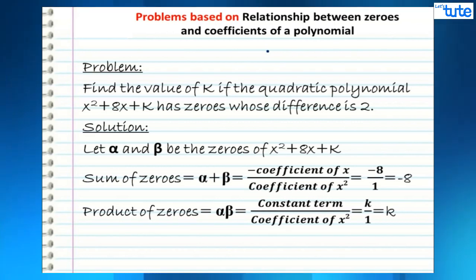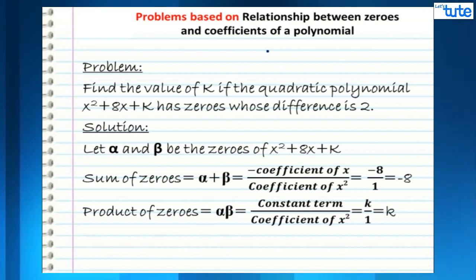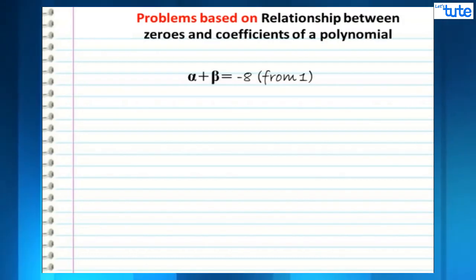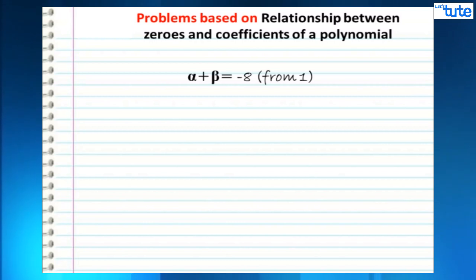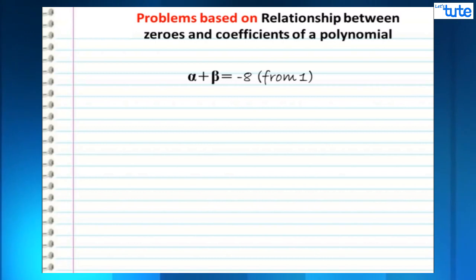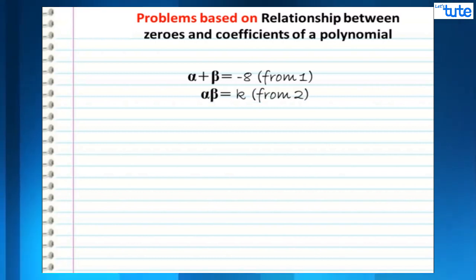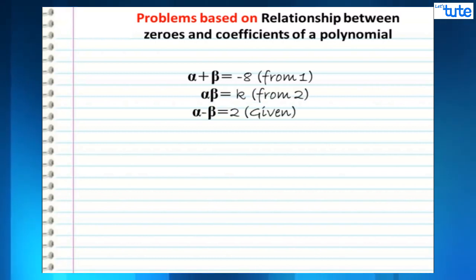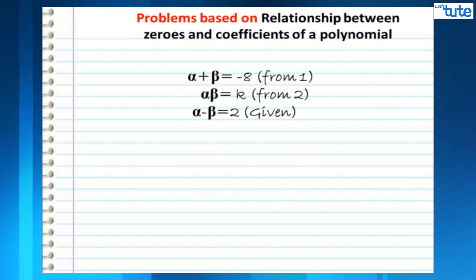Now we have: alpha plus beta equals minus 8 from equation 1, alpha times beta equals k from equation 2, and we have been given that alpha minus beta equals 2.